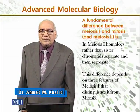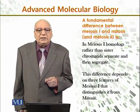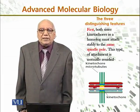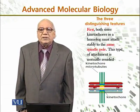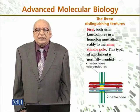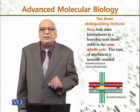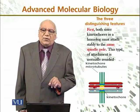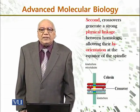This difference depends on three features of meiosis I that distinguish it from mitosis. The three distinguishing features are: First, both sister kinetochores in a homolog must attach stably to the same spindle pole. This type of attachment is normally avoided otherwise, as shown in the diagram below.